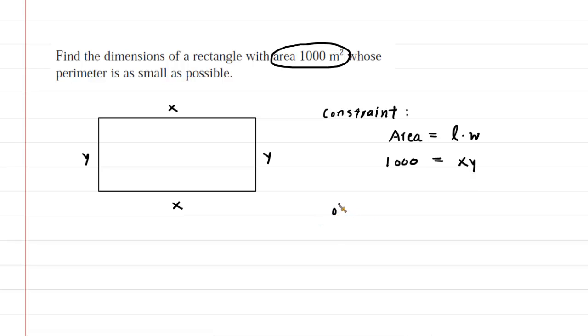But we need a second equation which is known as the objective. The objective is the quantity that you're trying to minimize. In this case, the quantity we're minimizing is the perimeter. So we need an equation for the perimeter. The perimeter of a rectangle is twice the length plus twice the width, so that will be 2x + 2y.